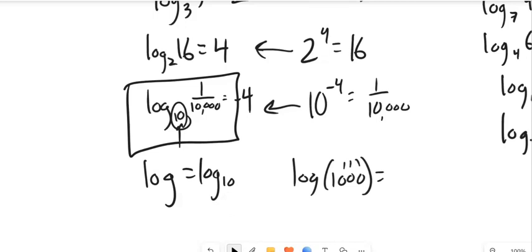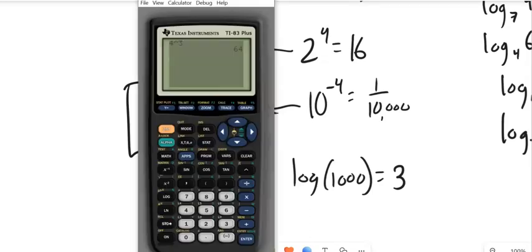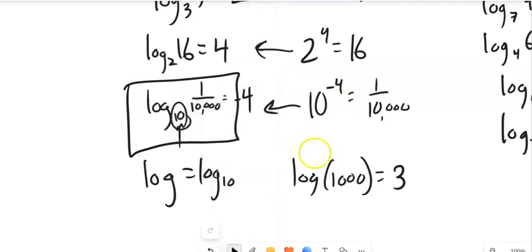Those three zeros there, right? So that'll be 3. And notice I can do just log, not log base anything but 10, but just log by using that button. It spits out a 3.